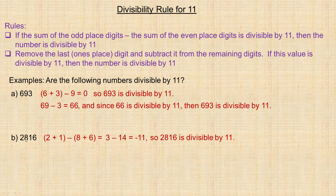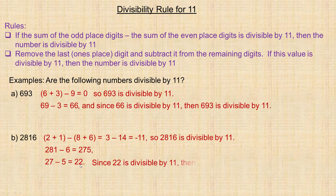Using the second method on 2816: take the 6 off and subtract from 281 to get 275. That may be too high to recognize, so take the 5 off and subtract from 27 to get 22. Since 22 is divisible by 11, that means 275 and also 2816 are divisible by 11.